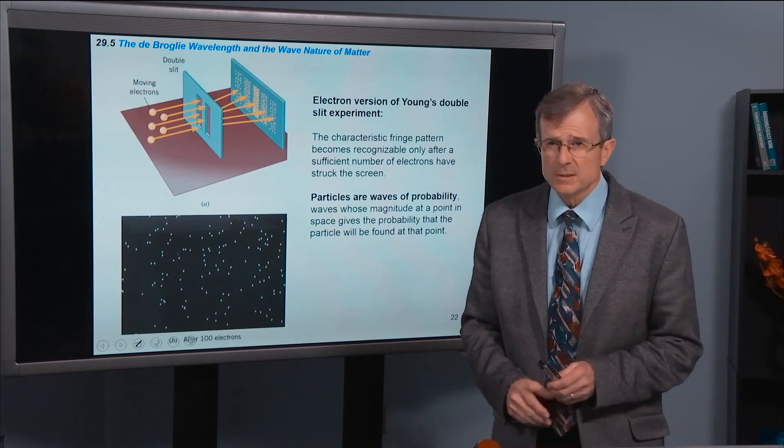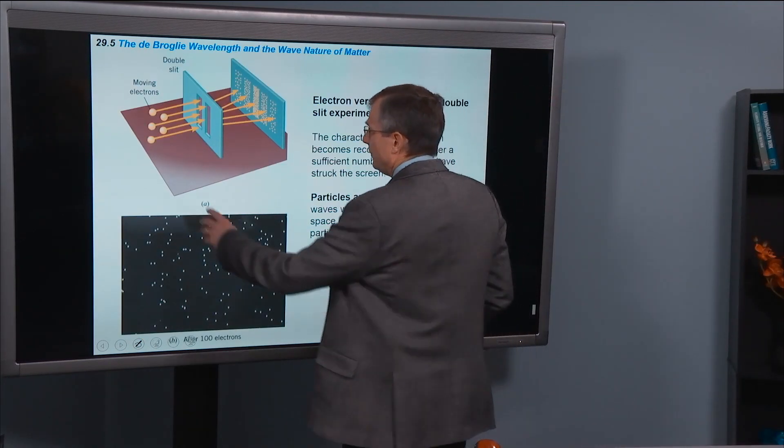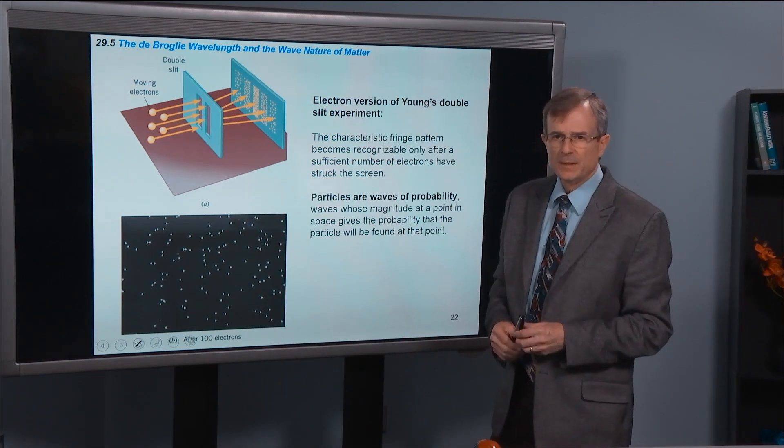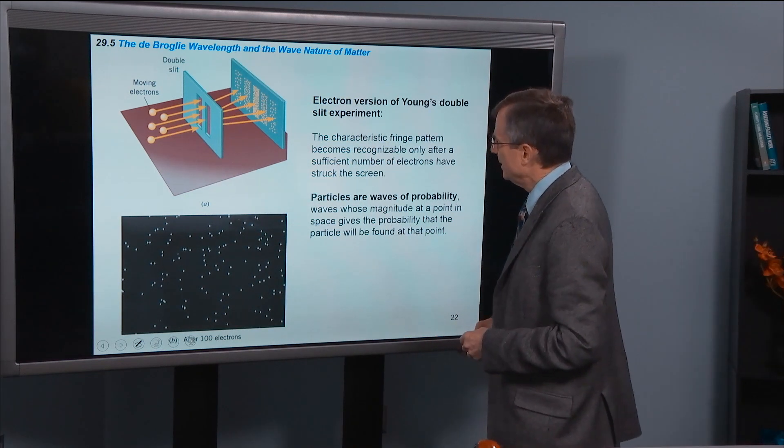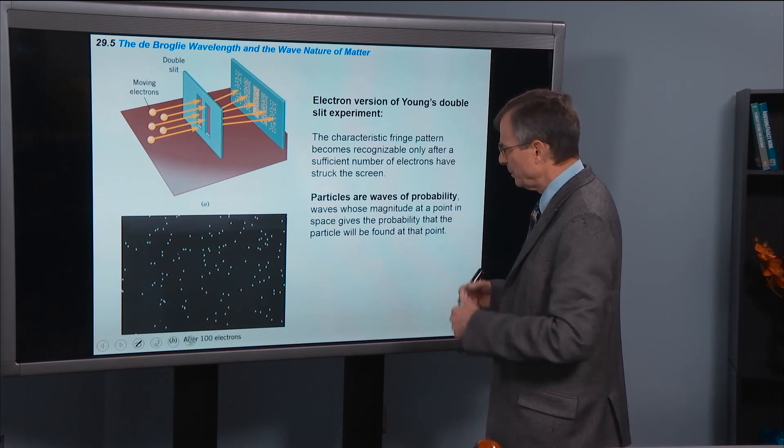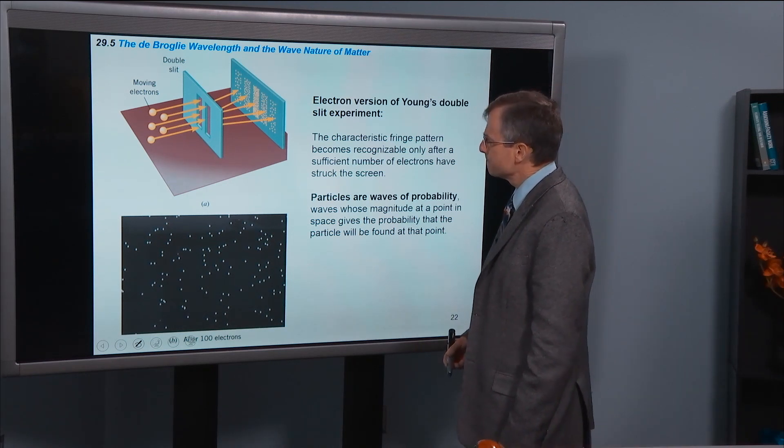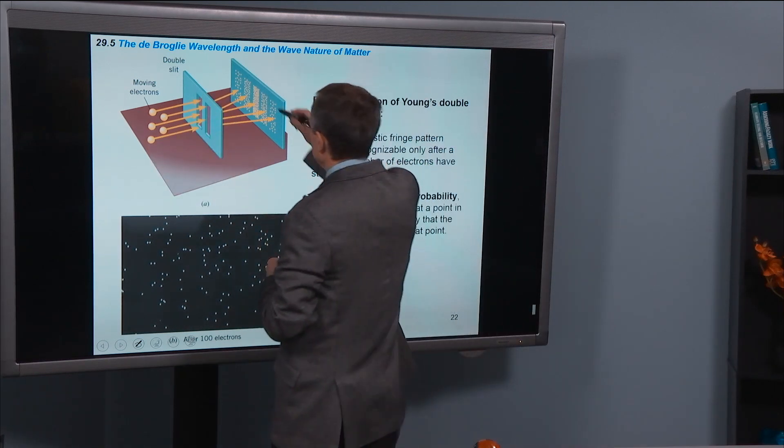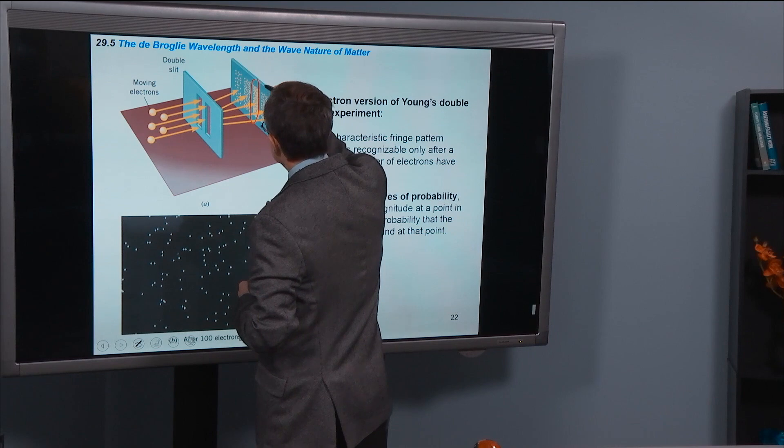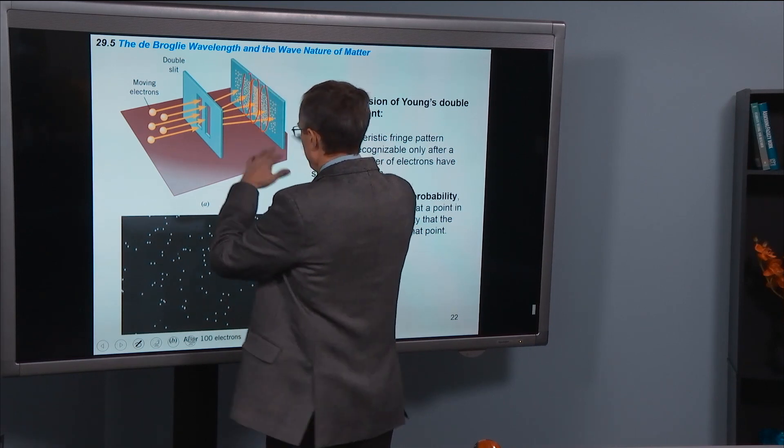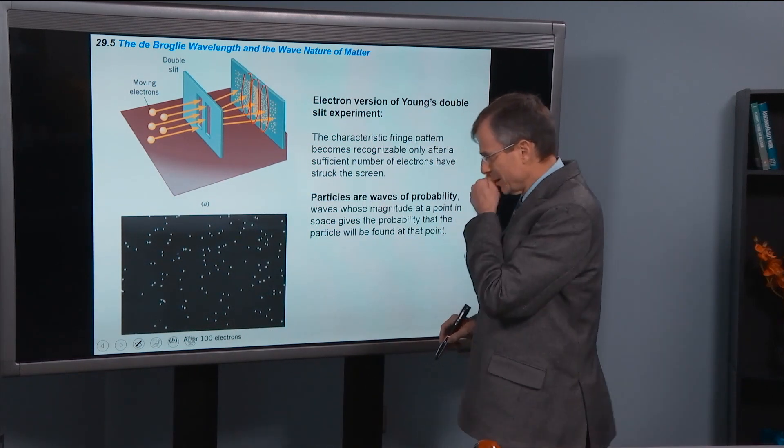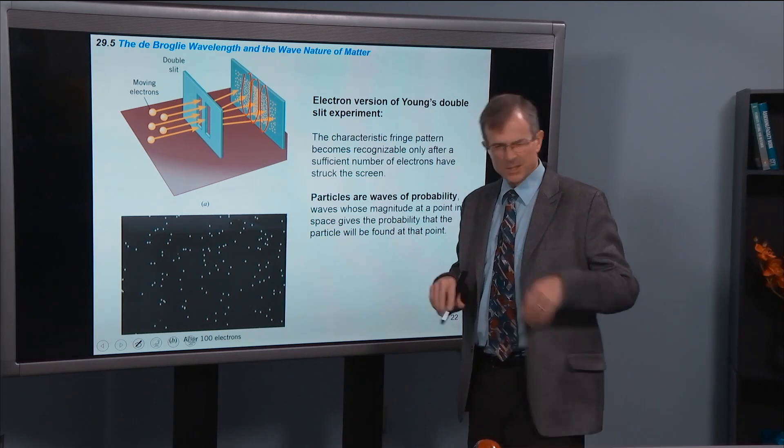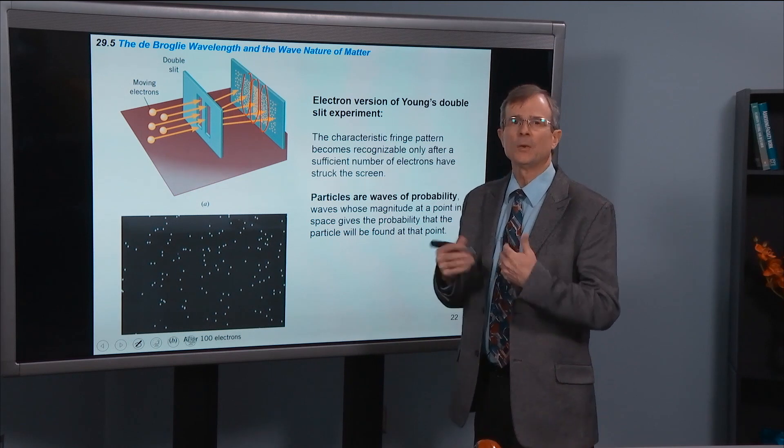Here's the evidence. And this was done by Davisson and Germer did this experiment. And it's since been replicated very carefully by others. So you've got these two slits. You've got electrons coming out toward the slits. You get a central bright fringe, bright, dark, bright, dark, et cetera.